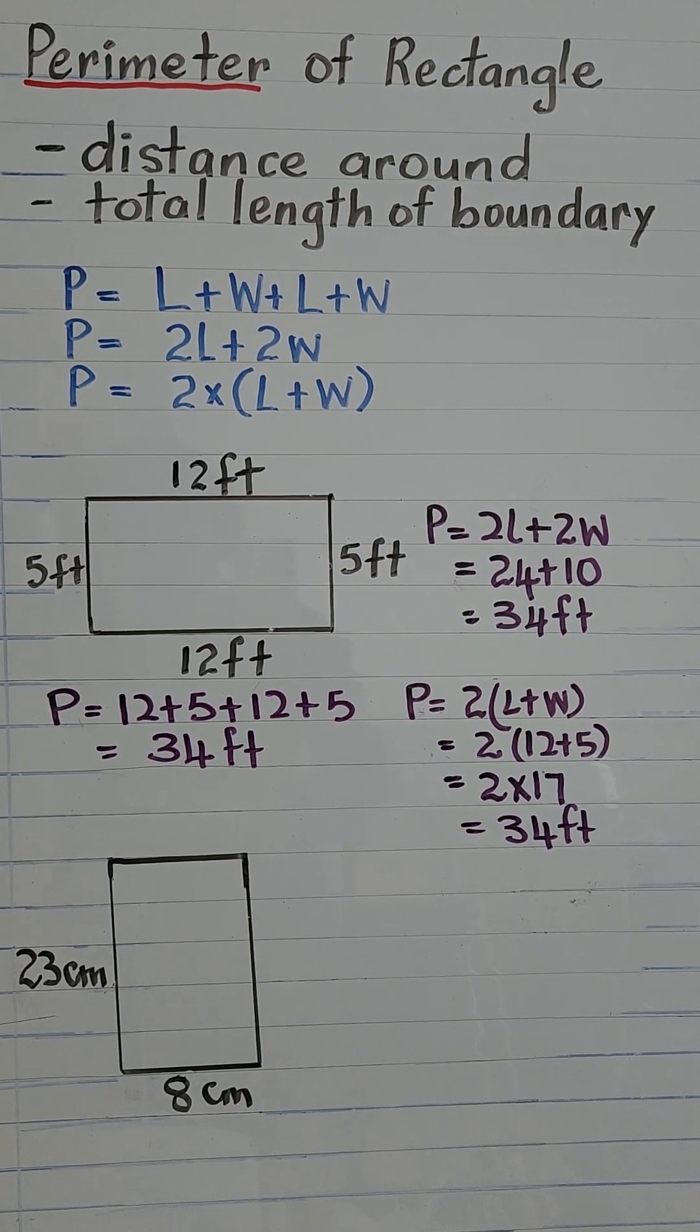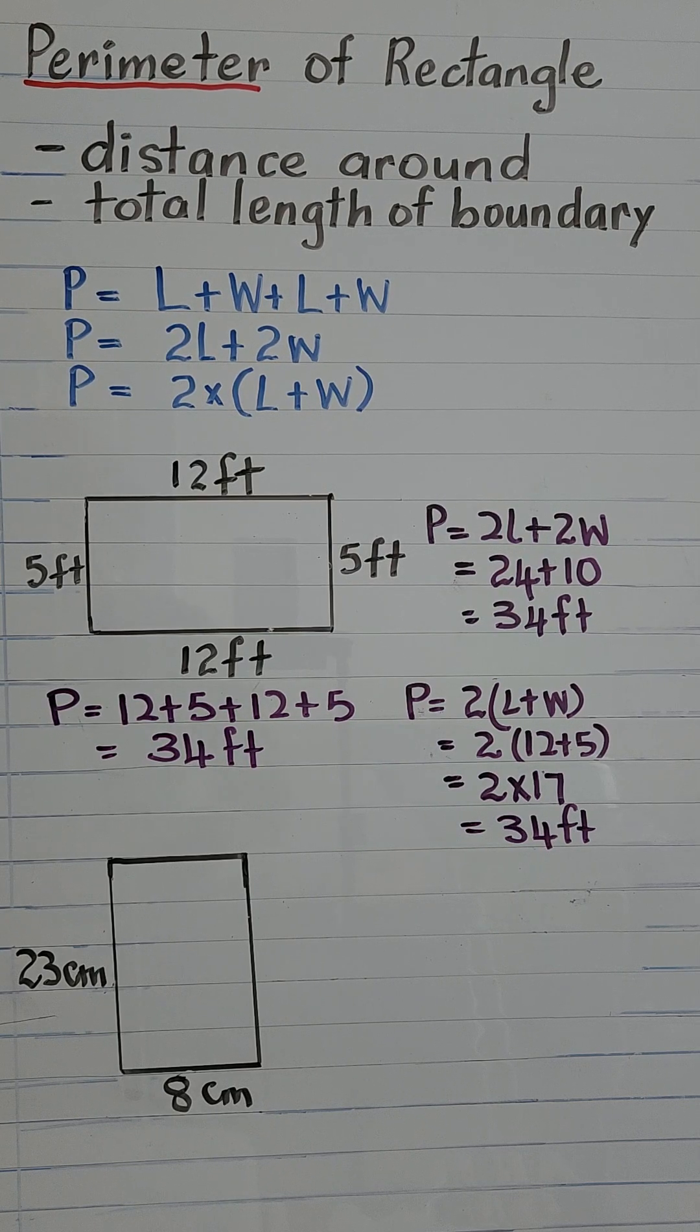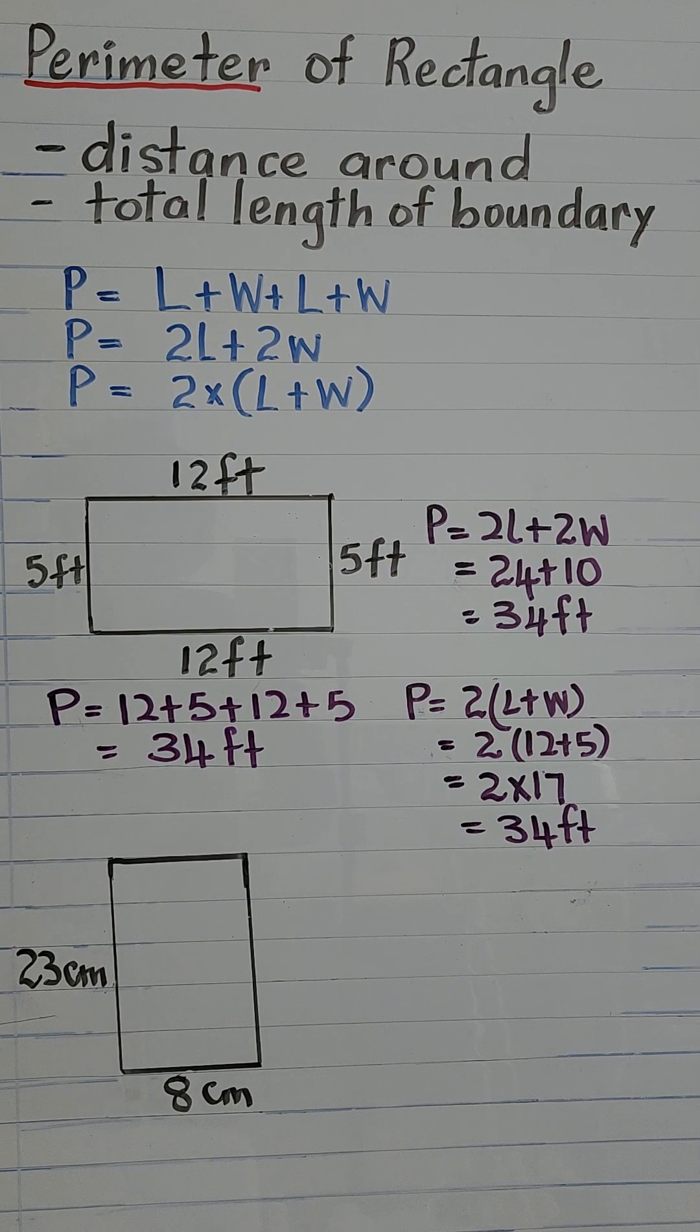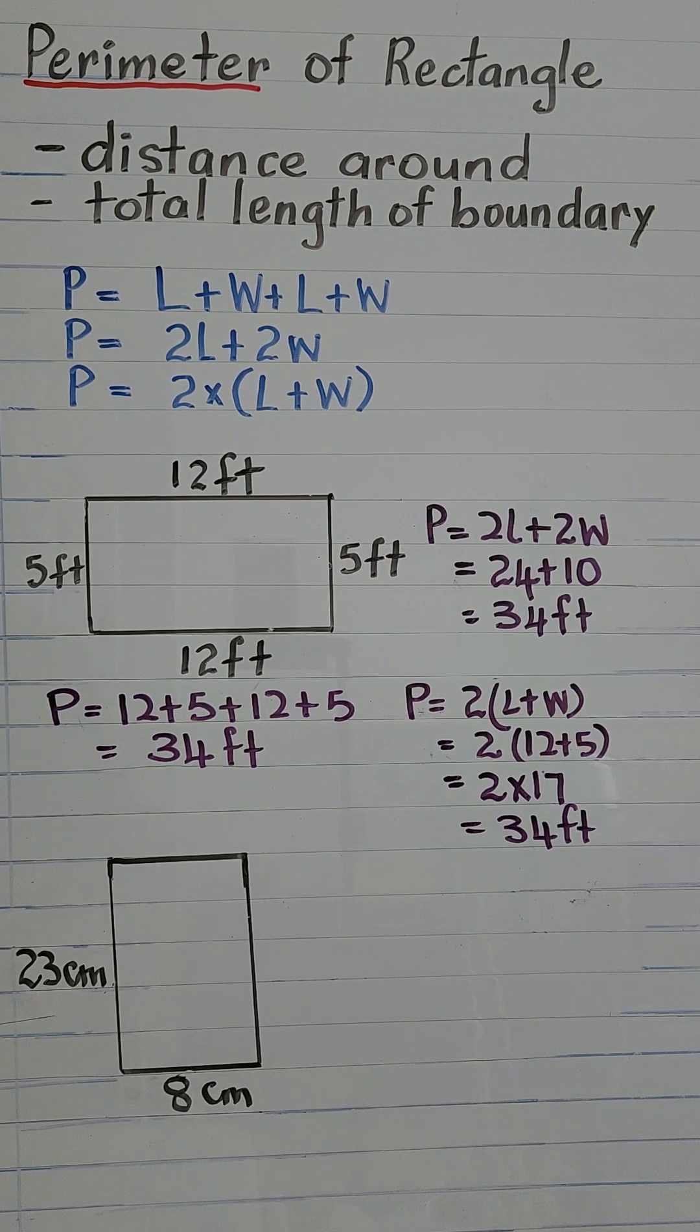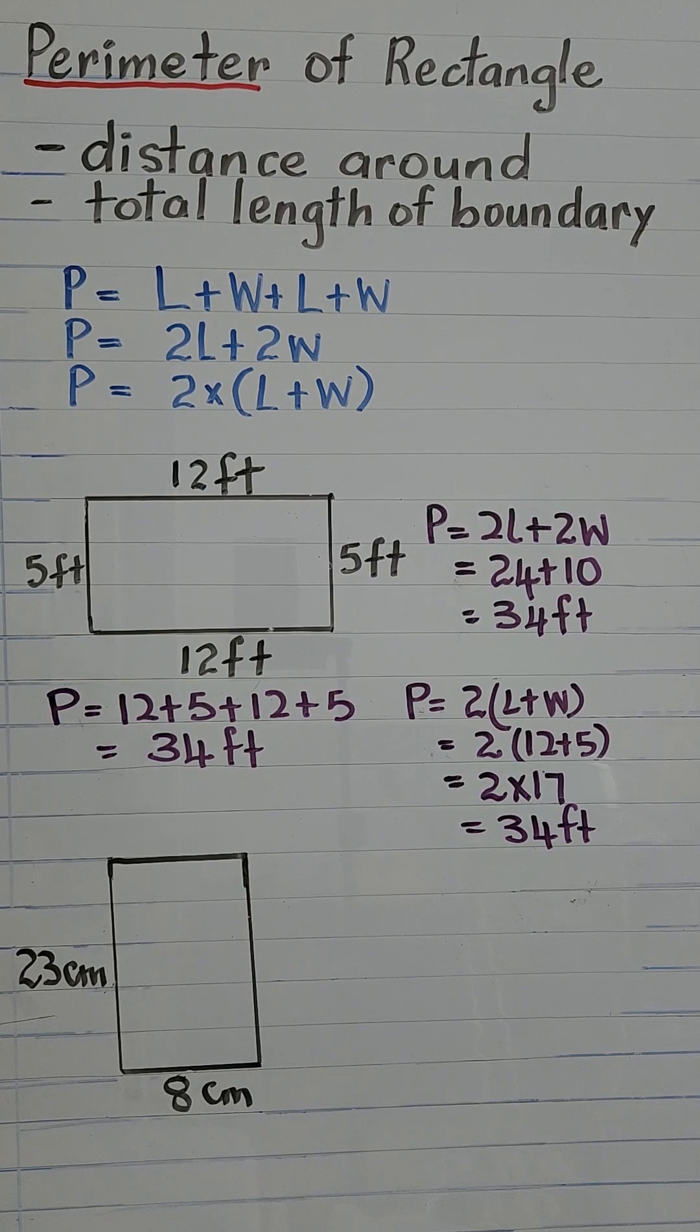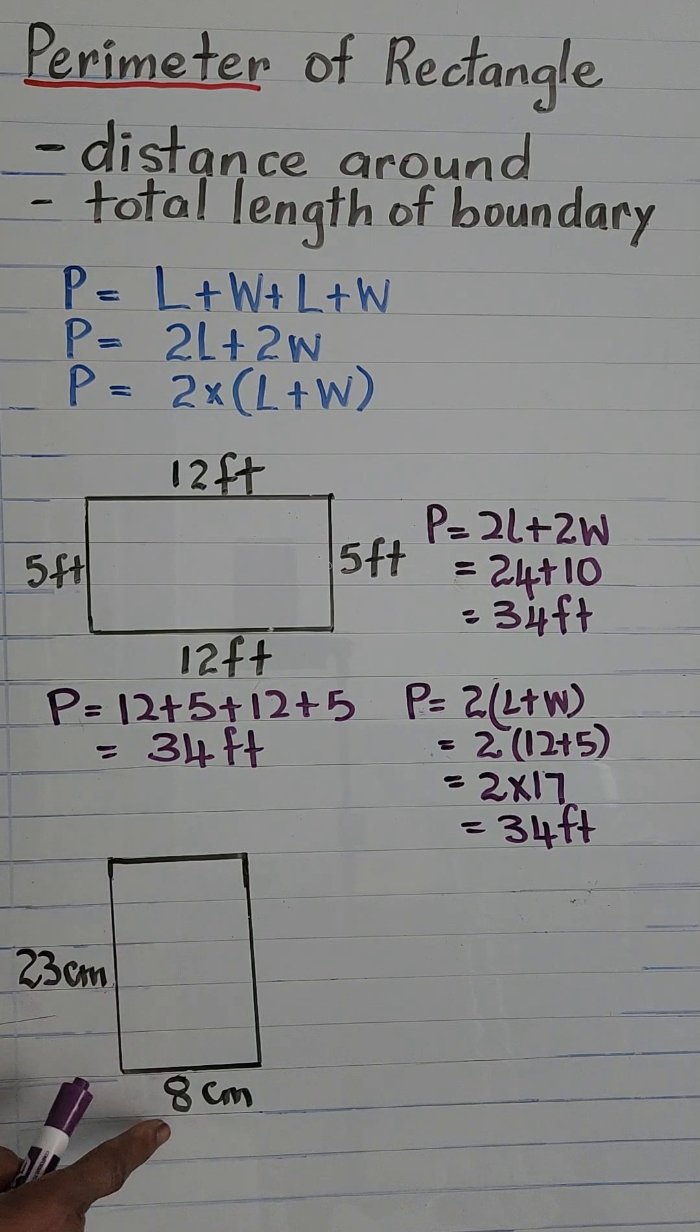Now let's look at the second example: 23 centimeters by 8 centimeters. Remember, we're taking the longest side to be the length, so we'll take 23 centimeters as the length. But if you notice on this rectangle, we only have two measurements. But if you recall, we said that in a rectangle, the opposite sides are equal.